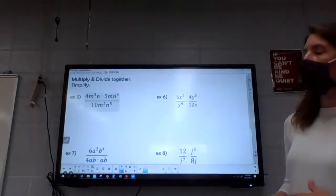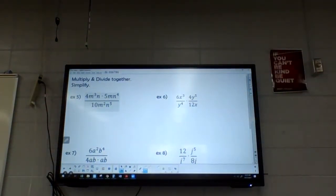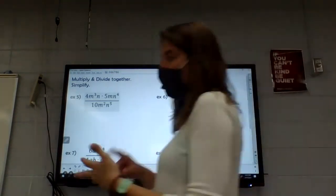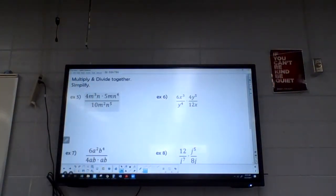So what we're doing now is we're putting multiply and dividing together, and then the bottom of the page, the second half, we're putting multiply, divide, and power to a power together. So we're putting all three together. It can definitely get more complicated. The biggest thing is we want to simplify as much as possible.